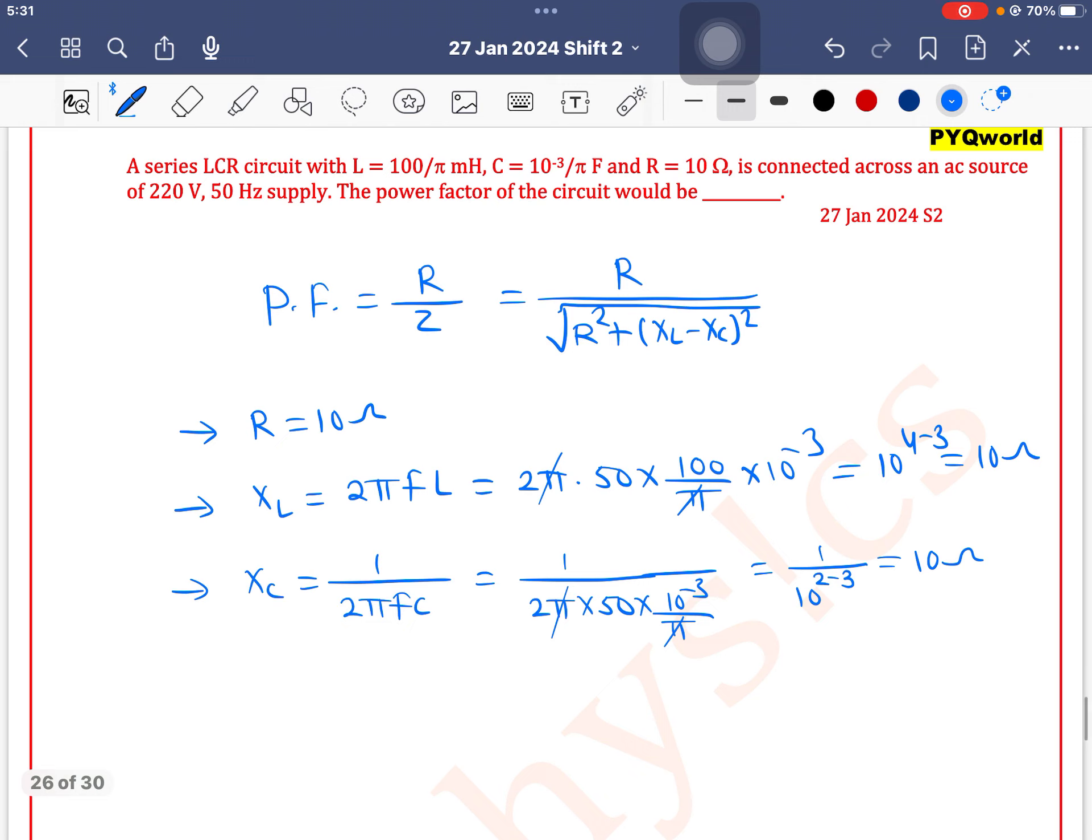So we have here XL is equal to XC. So power factor is R divided by under root of R square plus, XL and XC both are same so it will be 0. R by R is 1. So power factor is unity.